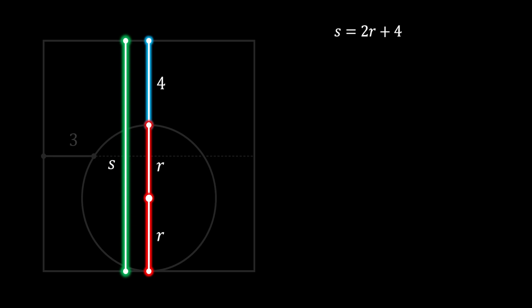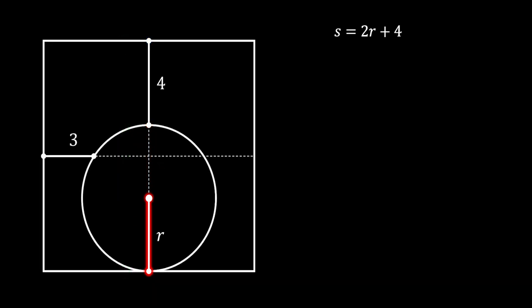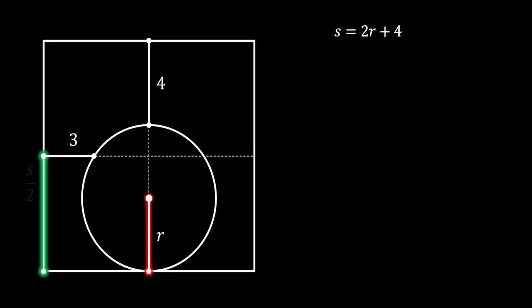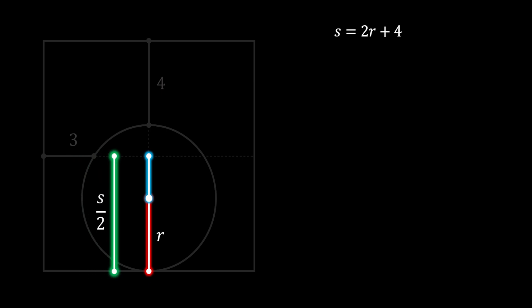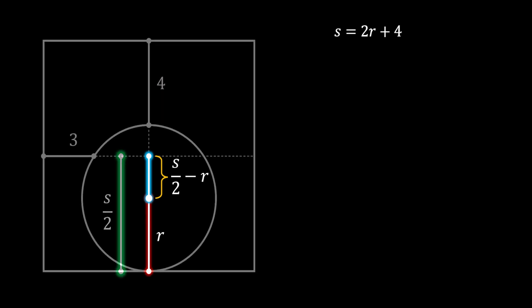Now let's find another one. Let's first label the half of our left side of the square as S over 2. And let's pull a vertical line from the center of our circle up until the center point of our square. You can clearly see that this line will have the length of S over 2 minus R.